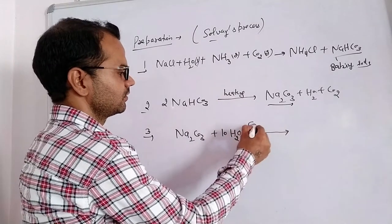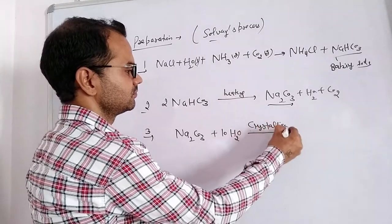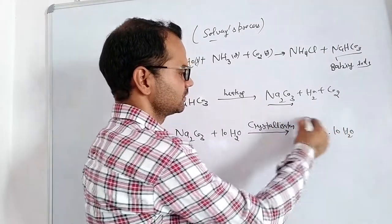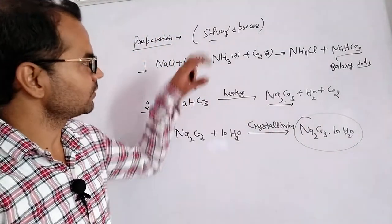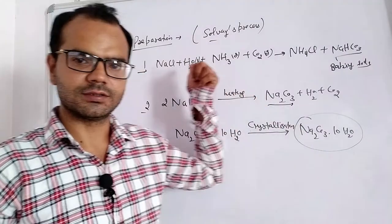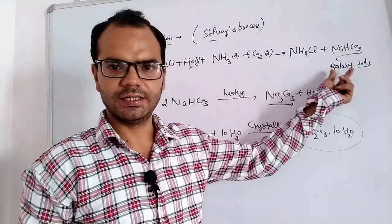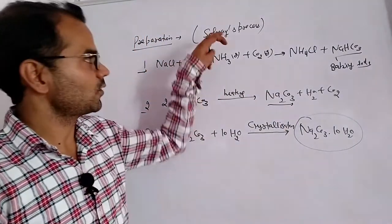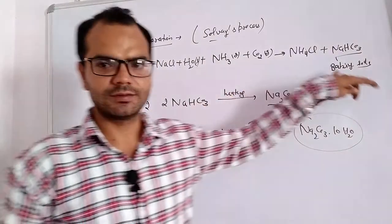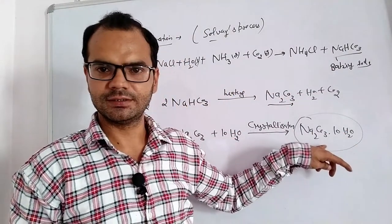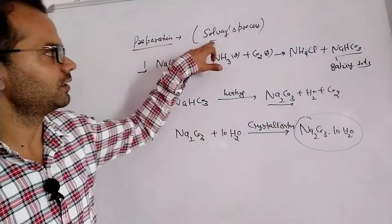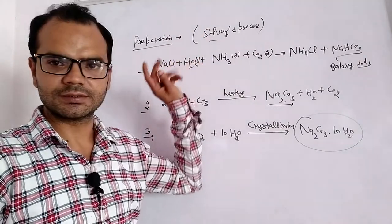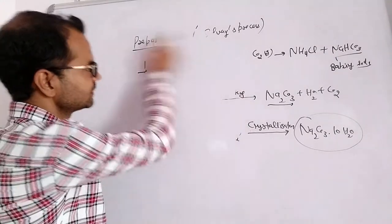In step three, the sodium carbonate is crystallized with water — this is called crystallization — and it absorbs 10 water molecules on its surface. So the last product of the Solvay process is washing soda. The Solvay process produces two products: baking soda and washing soda. This may be asked in exams.